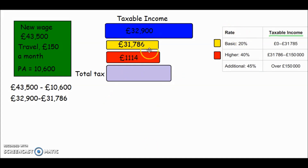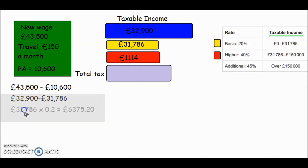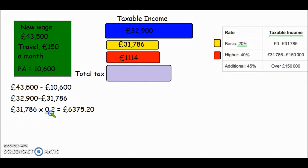Now let's work out how much tax we actually pay in each band. For the 20% rate, we multiply £31,786 by 0.2 — the decimal for 20% — and typing that into the calculator gives us £6,375.20. That is the amount of income tax we owe from the 20% band.